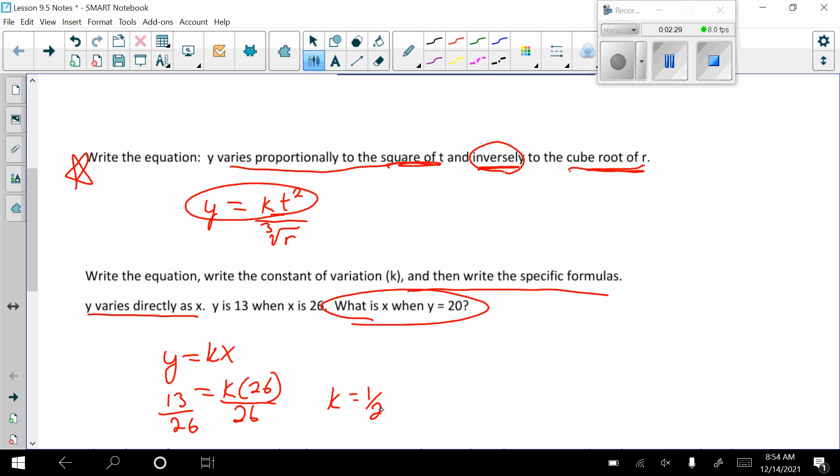And so now when I have my equation, Y equals 1 half X. So that's good. So I'm just plugging in for K. Now I can plug in any value for X or Y and solve for the other number, or other values. So what is X when Y is 20? So I'm going to say 20 equals 1 half X. So I'm going to divide by 1 half, which is the same thing as multiplying by 2. So X is equal to 40.